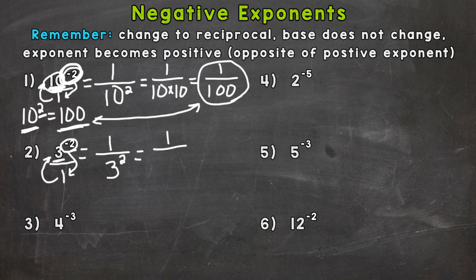3 to the power of 2 equals 9—3 times 3. So our answer is one ninth. Let's see how that relates: 3 to the power of positive 2 equals 9, so the positive 2 gives us 9 and the negative 2 gives us one ninth.